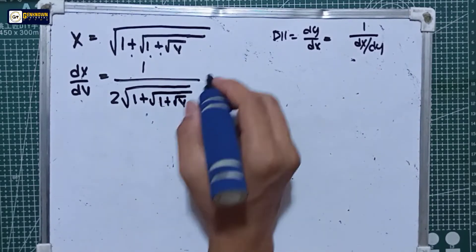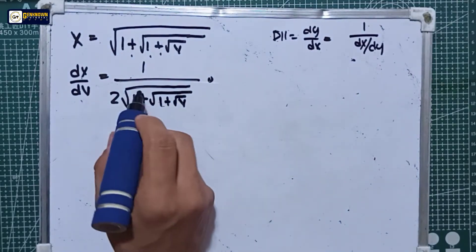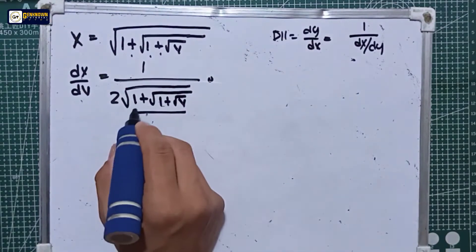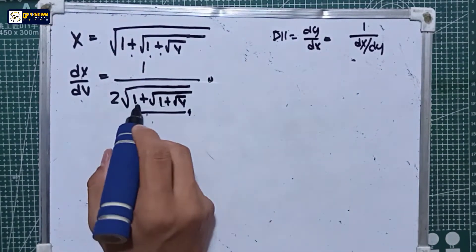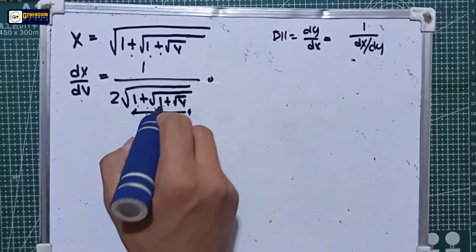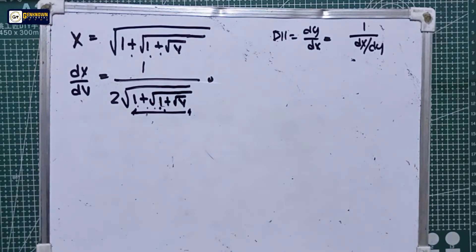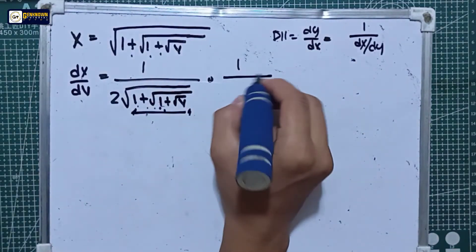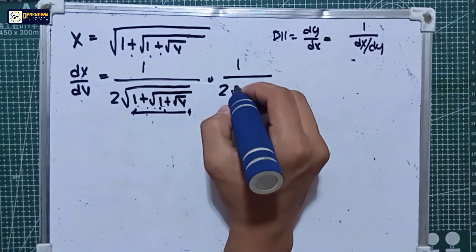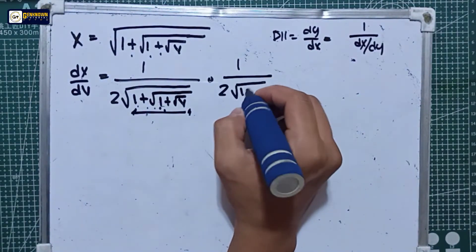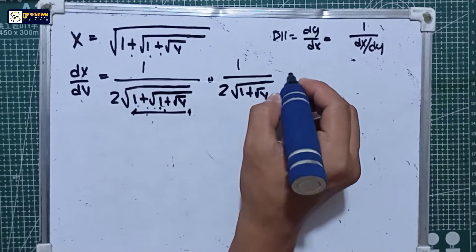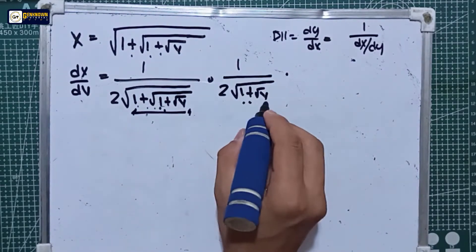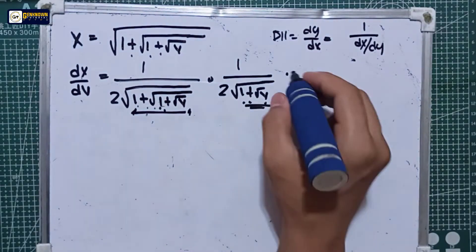multiplied by the derivative of 1 plus the square root of 1 plus the square root of y, which is equal to 0 plus 1 over 2 times the square root of 1 plus the square root of y, multiplied by the derivative of 1 plus the square root of y.